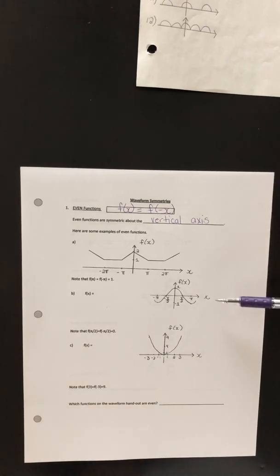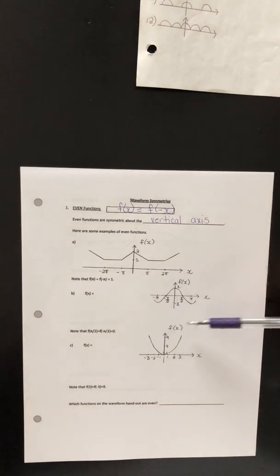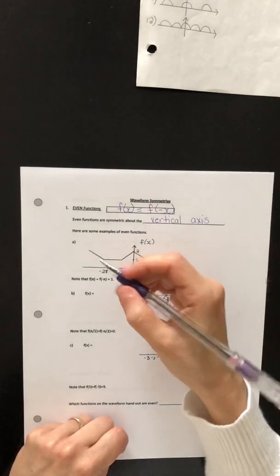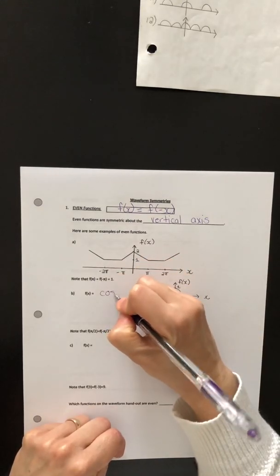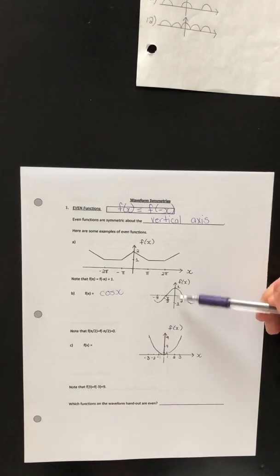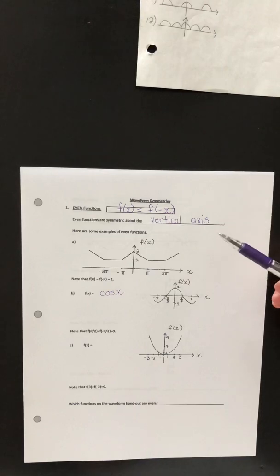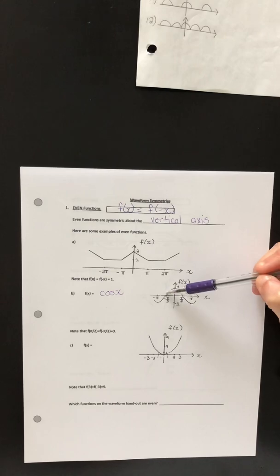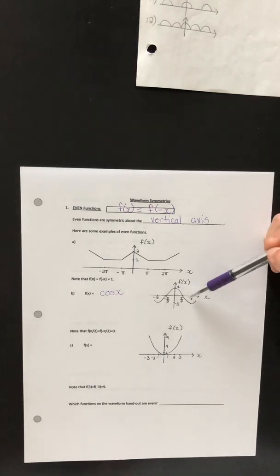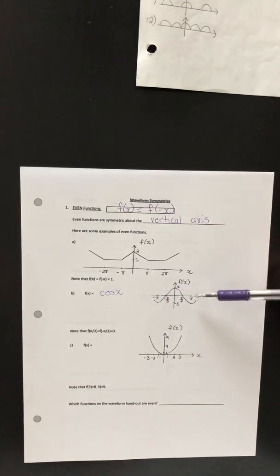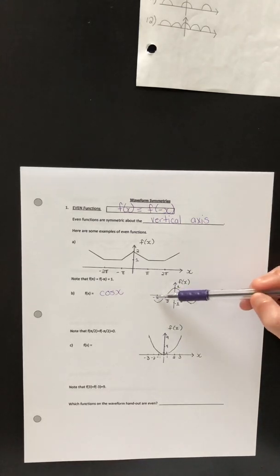Here's a second example of an even function — this is one that I'm hoping you'll recognize. This is f at x equals the cosine of x. It too is symmetric about that vertical axis. Note in particular that if we look at both pi over 2 and negative pi over 2, they have the same value of 0. Similarly, for pi and negative pi, those values of f are equal to negative 1.